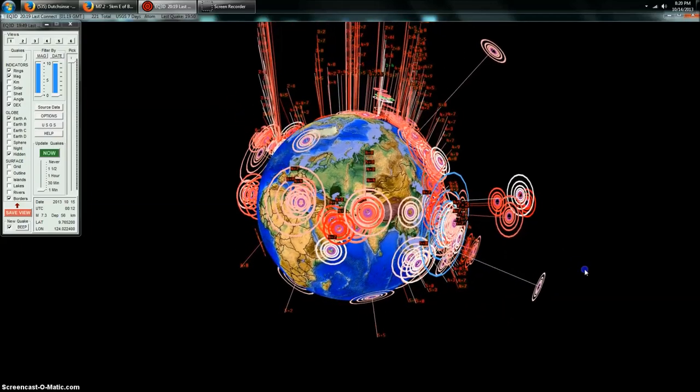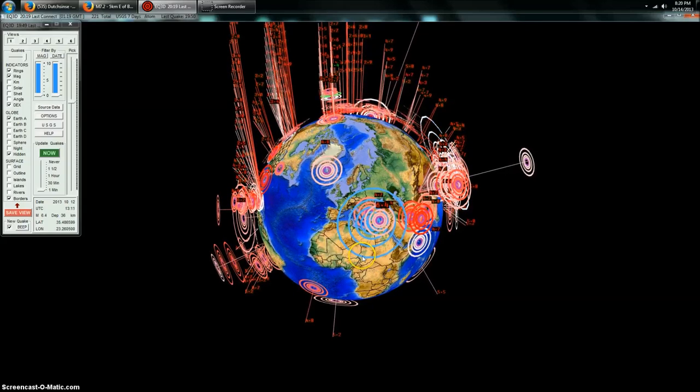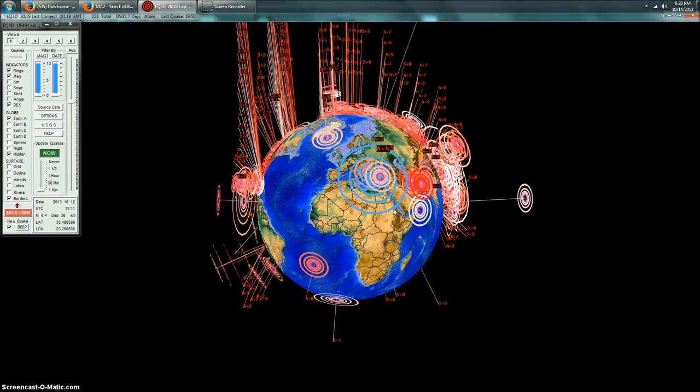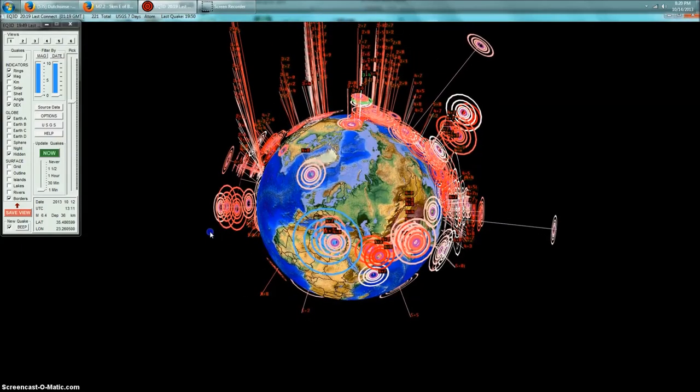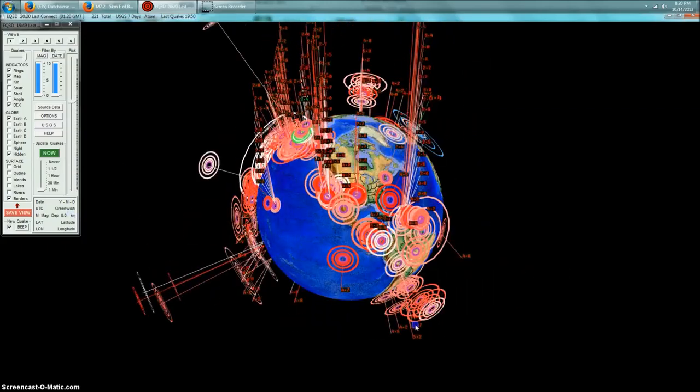We also had a 6.4 strike southern Greece. We don't normally see anything over 5.0 there—they do have 6.0 and larger, but we haven't seen one there in a fairly long while. You can connect the dots over to the Pacific where this entire area of unrest is occurring.